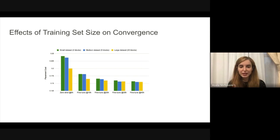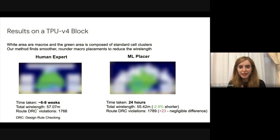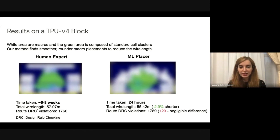Here is the effect of training on larger dataset sizes. We pre-trained the policy on three different datasets — one smaller, one medium with five blocks, and a larger one with 20 blocks. As the policy is exposed to a larger dataset, it can generate very high quality placement at zero shot on unseen new data. Here is another example: on the left, you can see the expert placement on a TPU block (blurred for confidentiality), and on the right is the ML placer. We achieved these results in 24 hours, and since then we've further reduced the runtime. The baseline requires a human expert in the loop and takes several weeks.